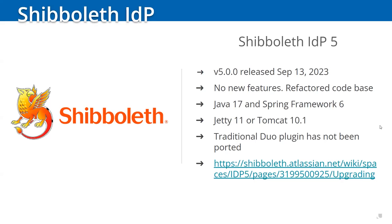The traditional Duo plugin — the old non-universal-prompt integration — will not be ported to version 5. If your MFA code is using the Duo pre-auth API, that integration needs to be completely refactored for the new modules. This is an important timing consideration for moving to version 5.0. You should definitely read the upgrading notes, as there are very specific steps required to remove artifacts from version 3 or version 4, mostly system-related files that will affect the upgrade itself.